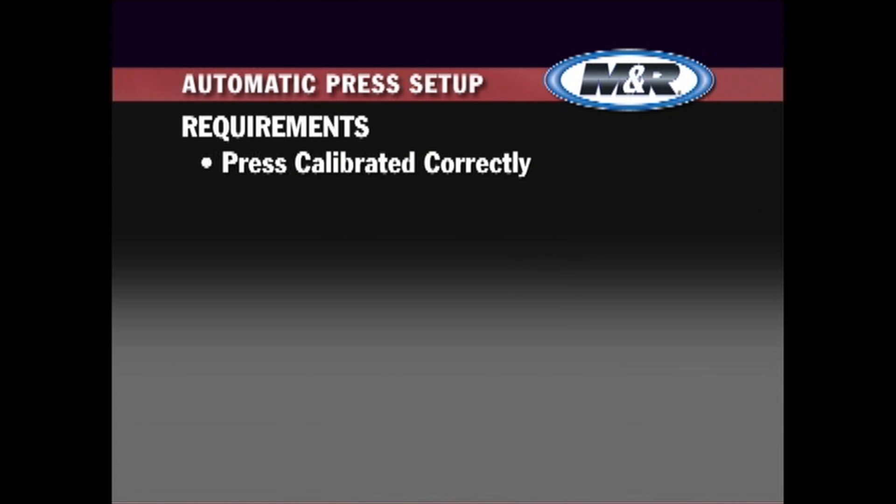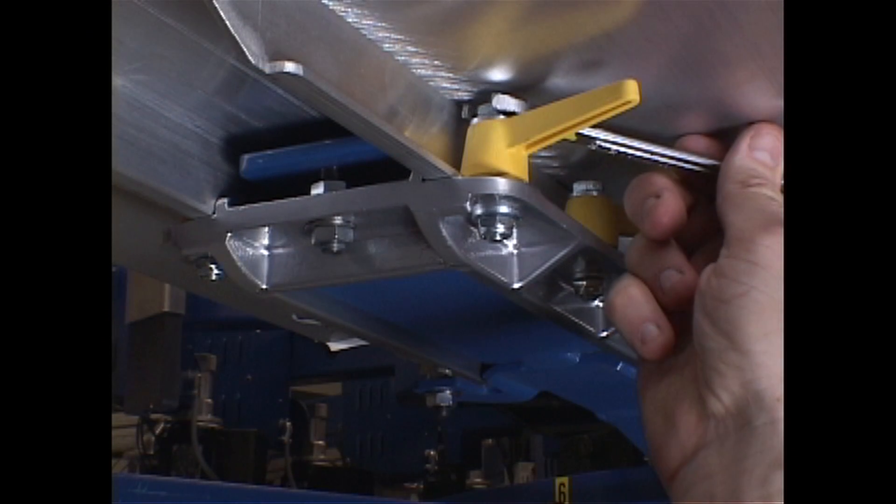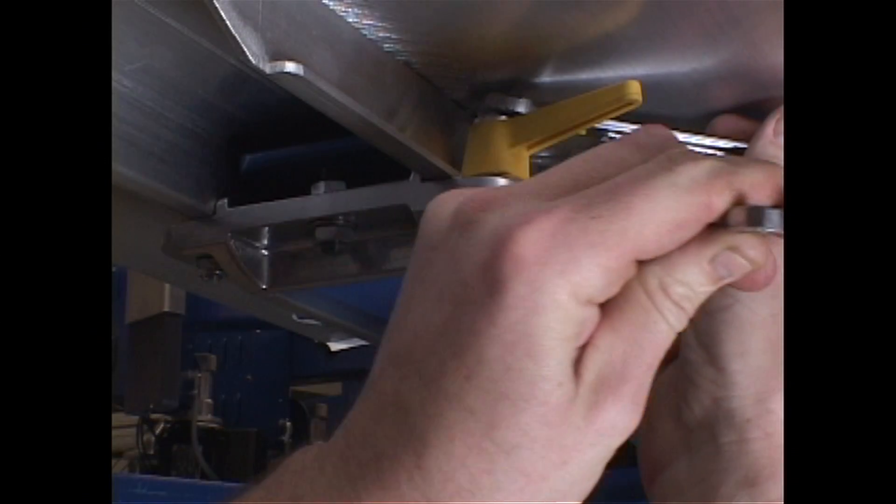Before setting up the Tri-Lock system, it is important to ensure that the press is calibrated. The micro-adjusters should be centered and locked down. The pallet locks should be adjusted to provide a tight lockdown of pallets.